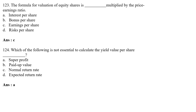The formula for valuation of equity share is dash multiplied by the price-earning ratio — Option A: interest per share; Option B: bonus per share; Option C: earning per share; Option D: risk per share. The correct answer is Option C — earning per share. The formula for valuation of equity share is: earning per share × price-earning ratio.